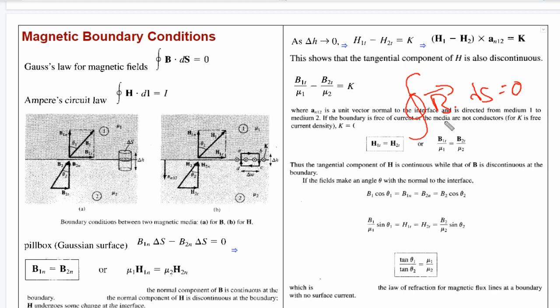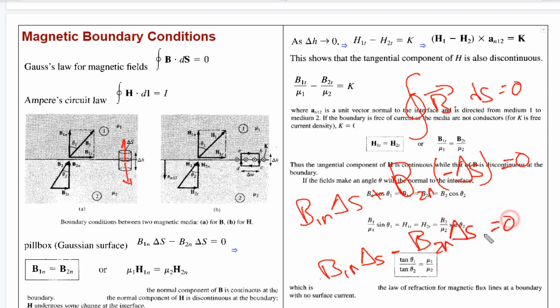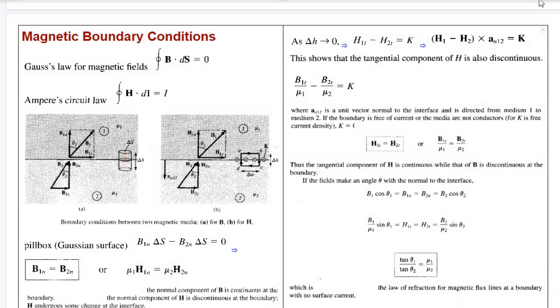If we apply Gauss's law using the lateral surface area, we get B1n in the delta A direction plus B2n in the negative direction, delta A equals zero. So B1n is equal to B2n. At the boundary, the normal component of magnetic flux density is continuous.